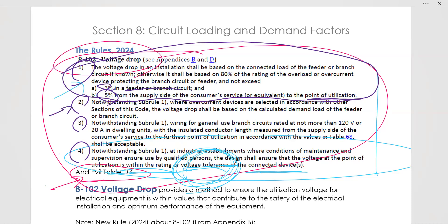Subrule 2 said that if you are in a different section of the code, then you can select the overcurrent devices according to that section of the code. Section 3 said that if you're in a residential circuit, 120 volts, 20 amps, then you can use table 68 to simplify things. And section 4 says if you're in an industrial establishment where there is maintenance and supervision, then the design will ensure that the voltage at the point of utilization is within rating and voltage tolerance of the connected device.